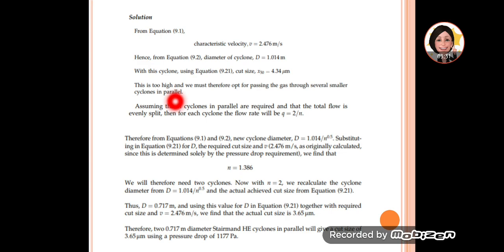With more than one cyclone in parallel, the cut size becomes smaller. Assuming there are n number of cyclones in parallel, the flow rate would be the total flow rate (2 meter cube per second) divided by n. Again, we use equations 9.1 and 9.2 to calculate the new diameter.